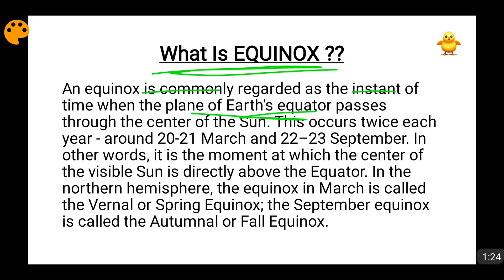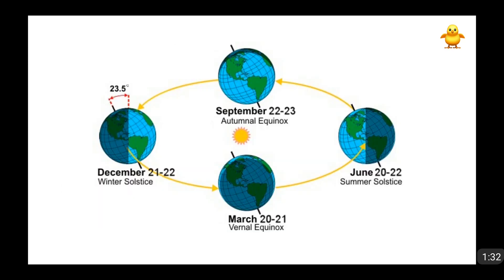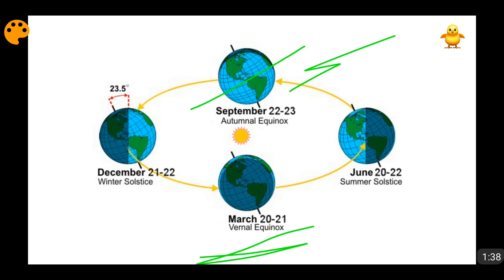If the plane of the equator of the Earth matches with the center of the Sun, then obviously that becomes Equinox, because if both of these things match, then it will be exactly equal day and night. These two positions shown here are the Equinox positions, where the equator is matching with the Earth's center, which is the condition of coincidence of the equator and the center of the Sun.